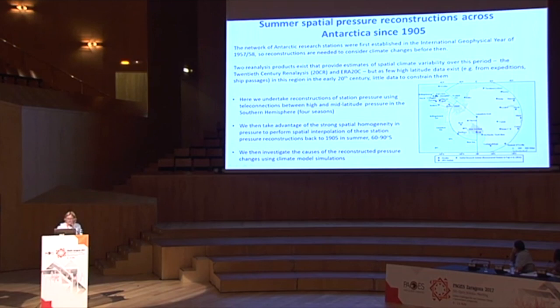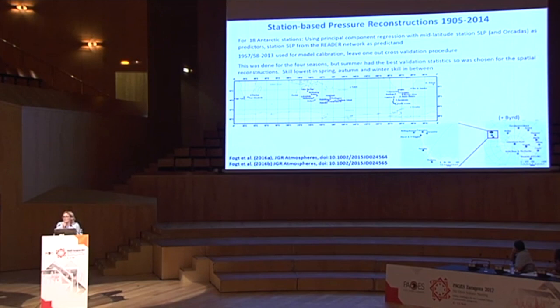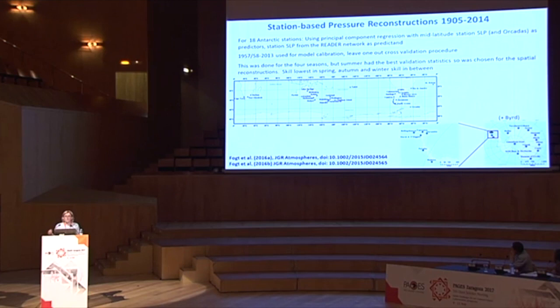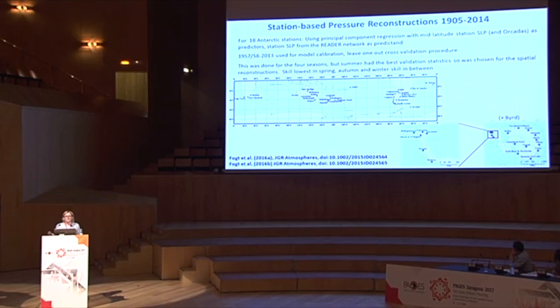For the station-based pressure reconstructions, published last year in two papers, we used principal component regression between mid-latitude station sea-level pressure and Orcadas sea-level pressure as predictors. We reconstructed sea-level pressure for stations around the edge of the continent, and surface pressure for Amundsen-Scott and Vostok inland stations. For each station, we correlated pressure in each season with mid-latitude stations; those significantly correlated were entered into principal component regression. Summer had the best validation statistics and was chosen for the spatial reconstructions.